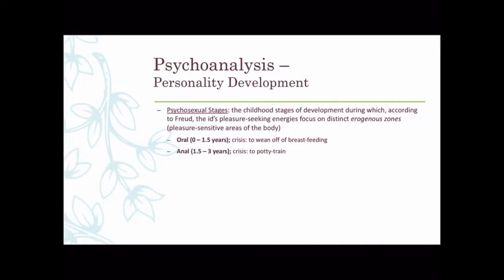During the anal stage, pleasure centers on the bladder and bowel movements. The crisis is dealing with external controls — that's a key answer on the worksheet. Before potty training, kids can go to the bathroom anytime; when potty training happens, children are stripped of this freedom. Parents impose rules about when and where they can go, and children react pretty poorly to this. It's the issue of parents or other adults telling you what you can or can't do, even with something as natural as bladder or bowel movement.